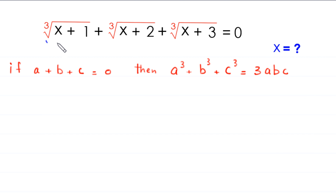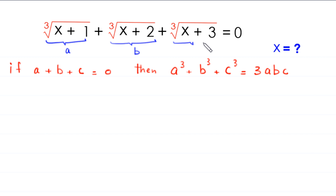In this equation, we have cube root of x plus 1 as a, cube root of x plus 2 as b, and cube root of x plus 3 as c. This means we have the form a plus b plus c is equal to 0. So we can write this expression in this form.